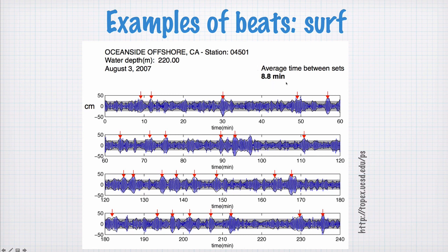In this particular example the average time between constructive interference, so the sets, is 8.8 minutes. But that's just for this example. It depends on where the different storms are and what's generating the waves as to how frequent the sets are or how big the contrast between the constructive and destructive interference will be. Nevertheless, if you've ever wondered where sets come from when you're surfing, that's beating between waves at different frequencies.